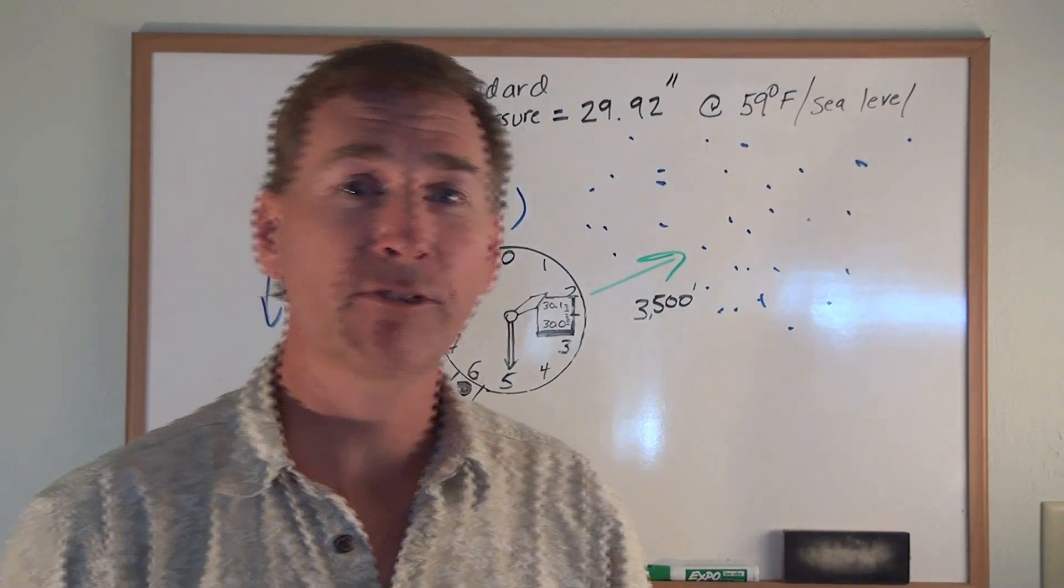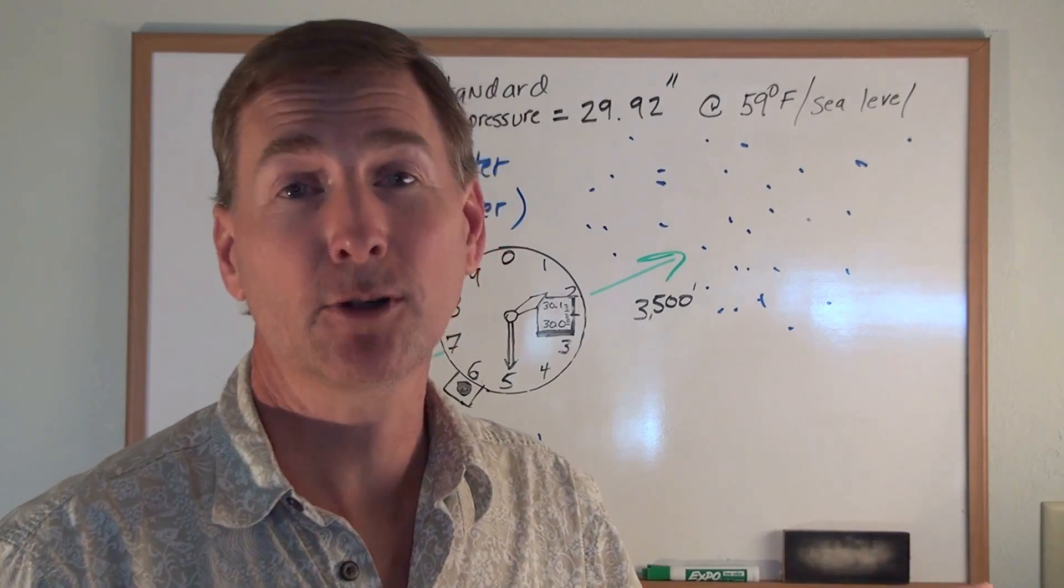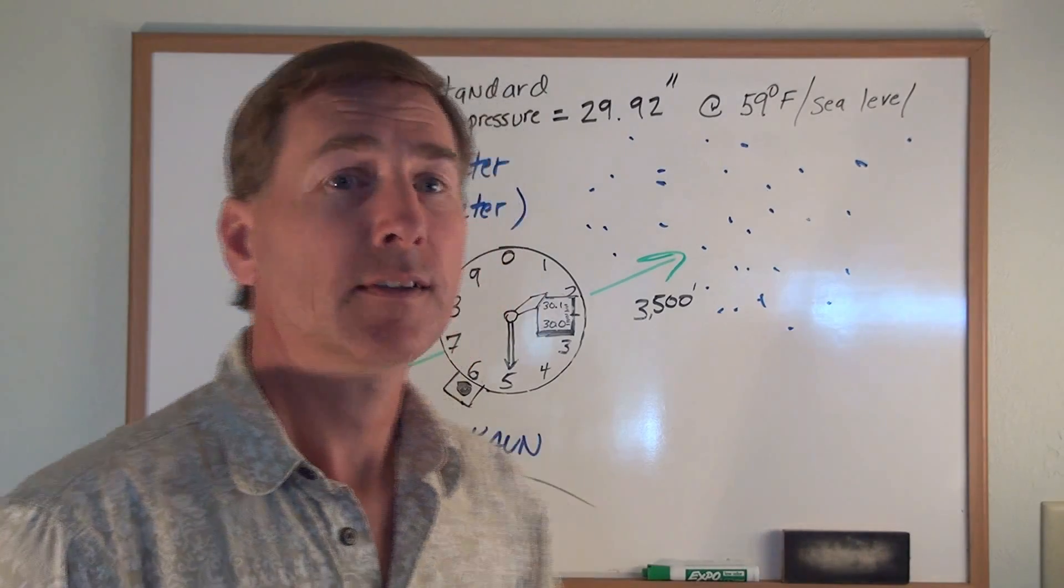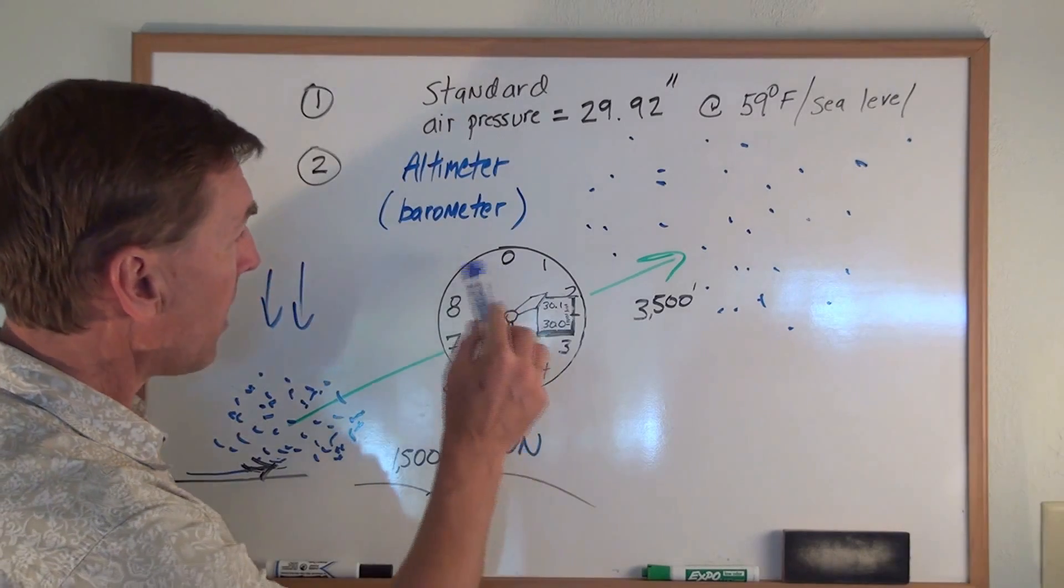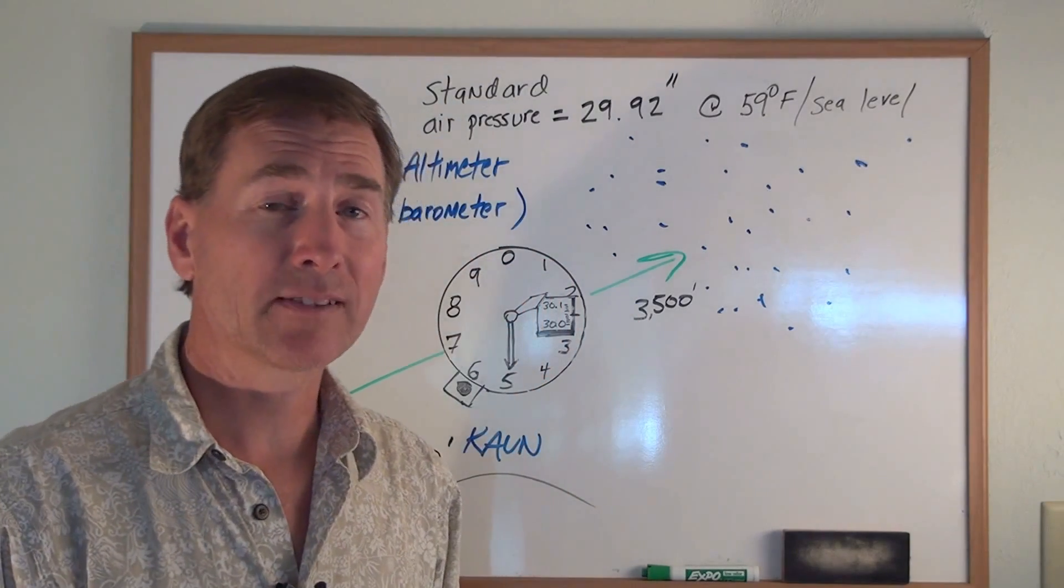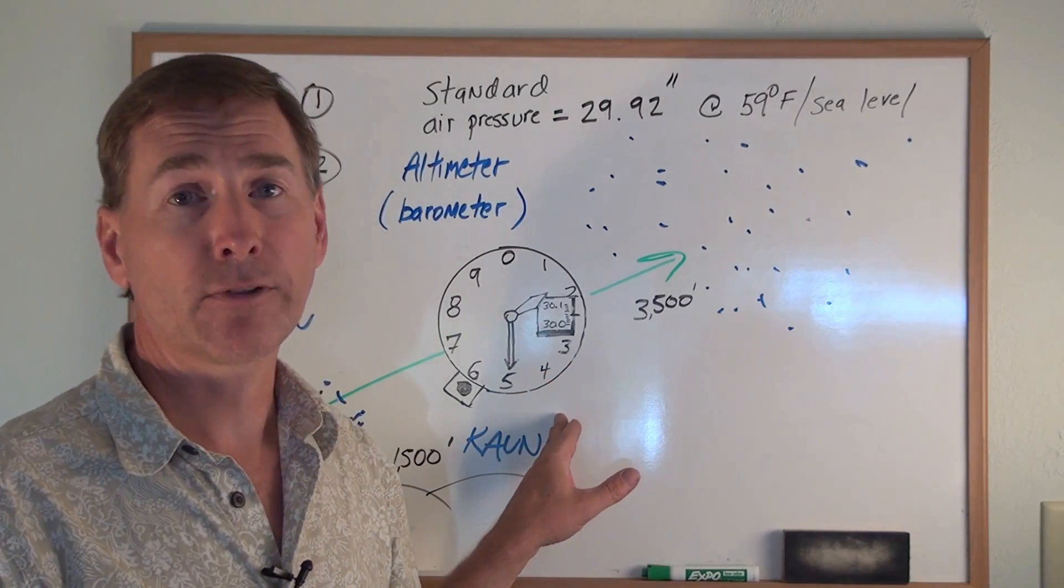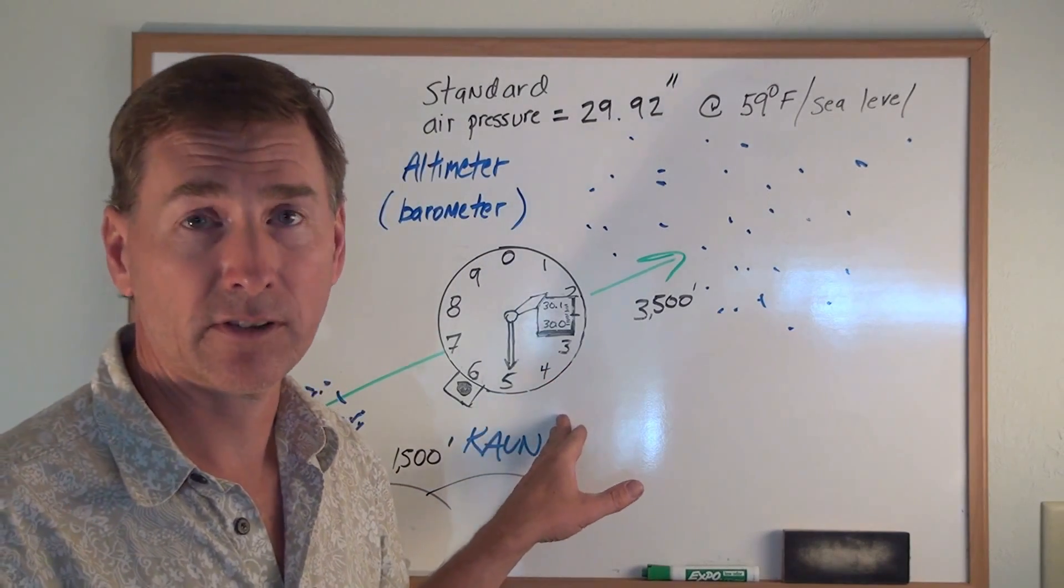We're back on the ground. It was a great flight. We flew from Auburn to Sacramento. I wanted to talk about how we set that altimeter because it went pretty quickly. Throughout the day, really from an hour to hour basis, the barometric pressure can change on us and so we have to calibrate it for that elevation of the airfield.